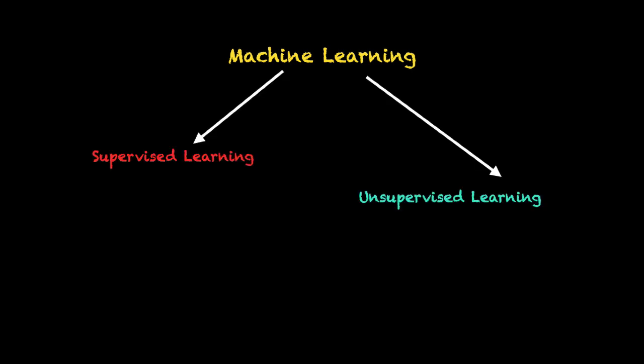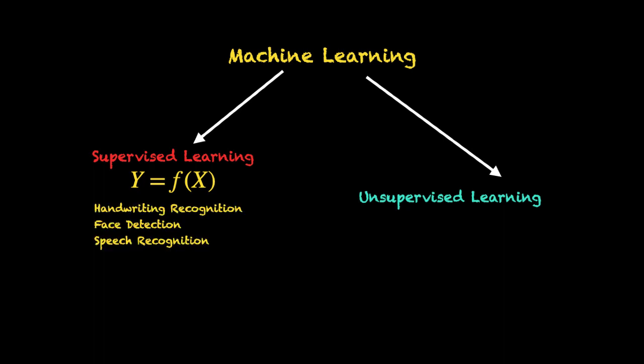As you might know, machine learning essentially consists of two different paradigms. One is supervised learning, which is about learning the functional relationship between a set of input and output data points. For example, you train algorithms — of which artificial neural networks (ANNs) are the most popular — so that the functional relationship between input and output can be learned approximately. This has many applications, for example in handwriting recognition, face detection, speech recognition, and many other real-life applications.